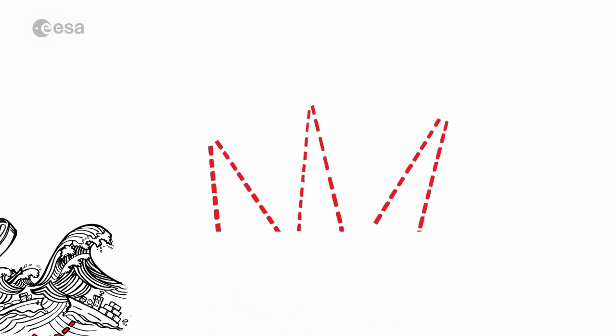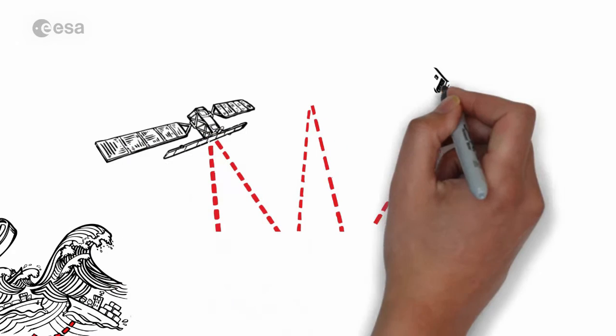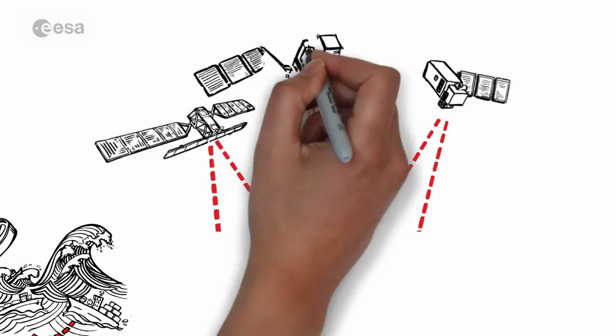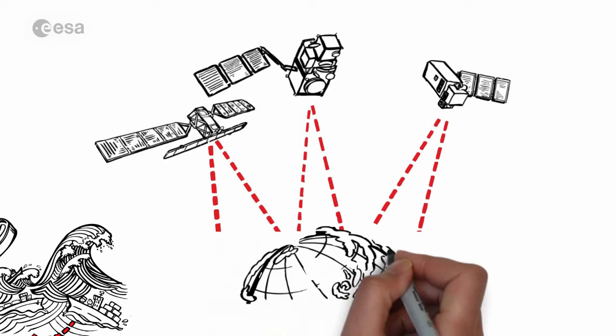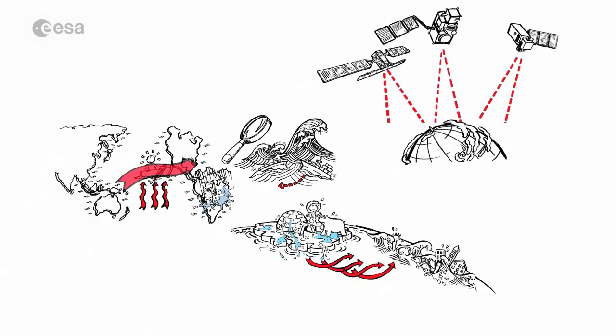Now the European Space Agency ESA, together with the European Commission and EUMETSAT, has launched its third Sentinel satellite, a satellite dedicated to the oceans and the properties of water.